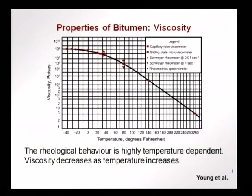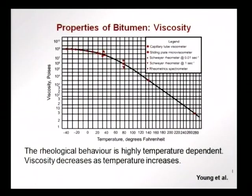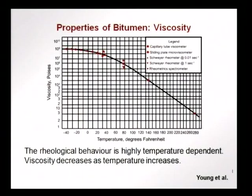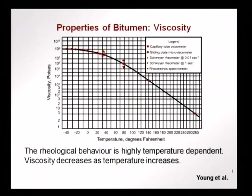This graph from Young et al. shows how viscosity decreases as temperature increases, obtained from tests using different types of rheometers and viscometers. On the y-axis we have viscosity in poises of a bitumen, and on the x-axis we have temperature. The rheological behaviour represented by the coefficient of viscosity is highly temperature dependent. Viscosity decreases significantly as temperature increases, especially above 0 degrees Celsius, with a significant change in values.